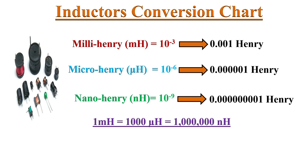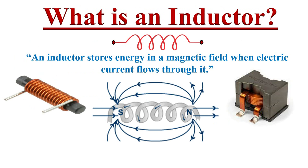1 milli-Henry equals 1000 micro-Henrys, which equals 1 million nano-Henrys.